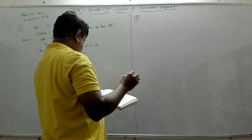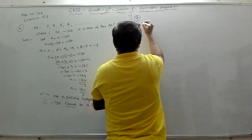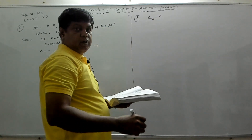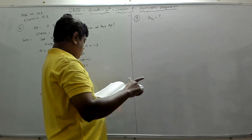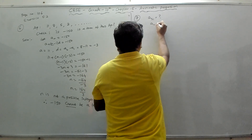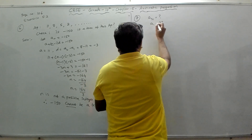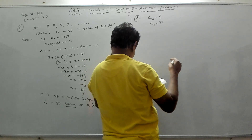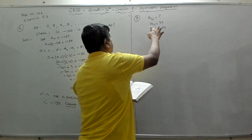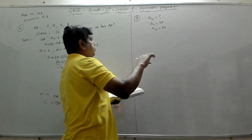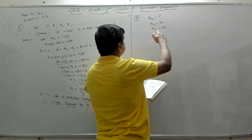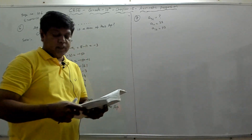Problem 7: find the 31st term of an AP whose 11th term is 38 and 16th term is 73. So we need to find a31. Given: a11 = 38 and a16 = 73.